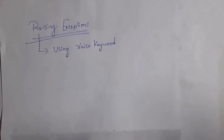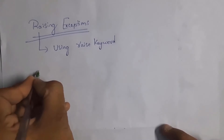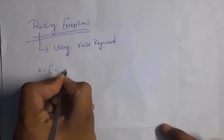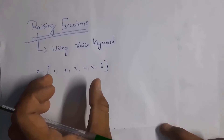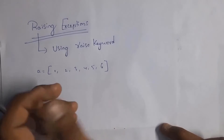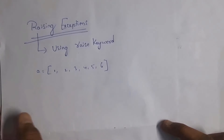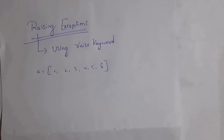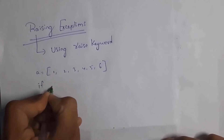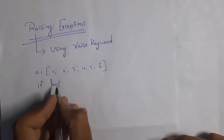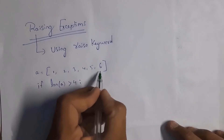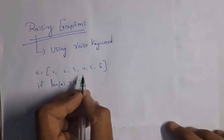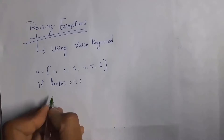First I will explain raising exceptions. By using the raise keyword we can create our own exceptions. Here I have a list: a = [1, 2, 3, 4, 5, 6], which contains six items. I want to create my own exception — if the length of this list is greater than four, it should display an exception.